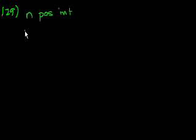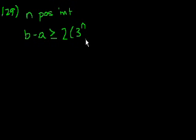We're on problem 129. If n is a positive integer, is the value of b minus a at least twice the value. So that's greater than or equal to twice the value of 3 to the n minus 2 to the n. And that's what we need to test.